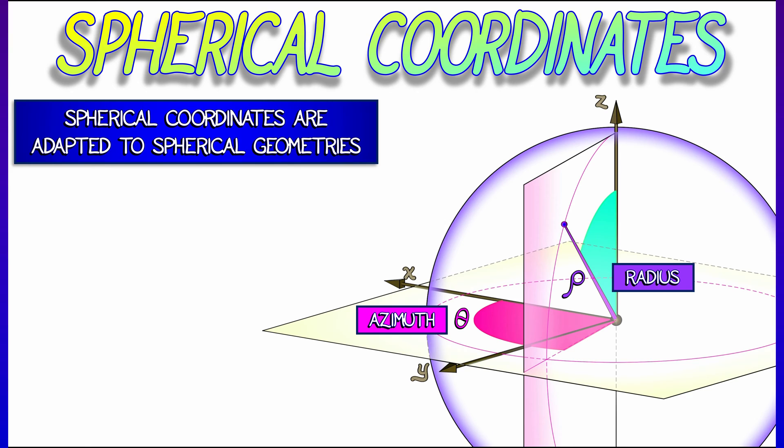And why does this have a fancy name? Well, it's no longer the angle. There's another angle, denoted phi, and called the inclination. This is the angle that you make with the z-axis.